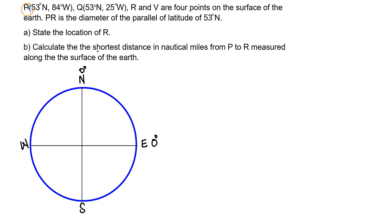So we have P, Q, R and V are four points on the surface of the Earth. PR is the diameter of the parallel of latitude of 53 degrees north. We are told to state the location of R for part A and then for part B we need to calculate the shortest distance in nautical miles from P to R.